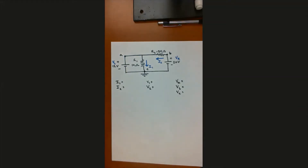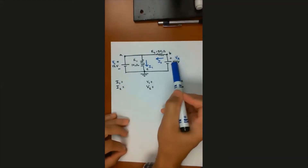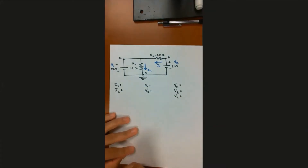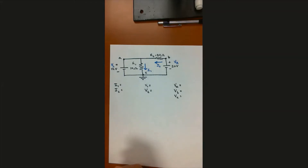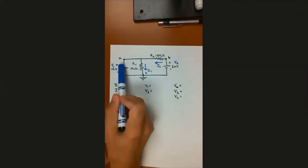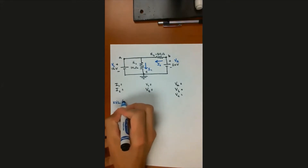Now I need to find loops or nodes where I have one unknown. I know the voltage of both sources, so those are known; the voltage drops across the resistors are unknown. I need a loop with one unknown voltage. Looking around, I think the easiest way to start is to make a loop for the left loop, because I have one known voltage source and one unknown voltage drop. So I'm going to write a KVL equation for the left loop.